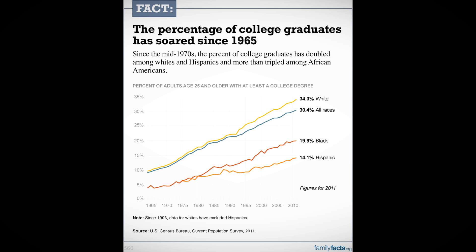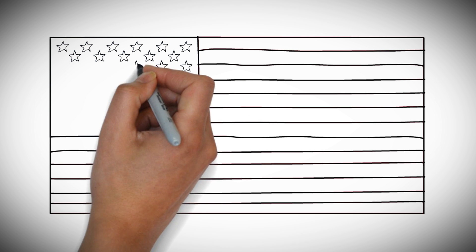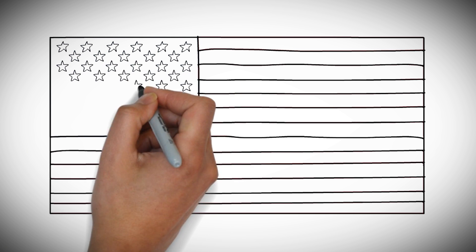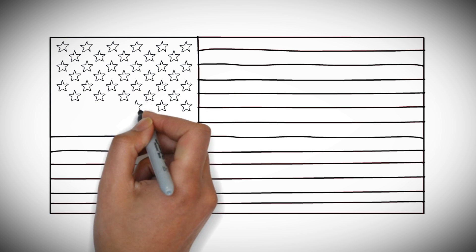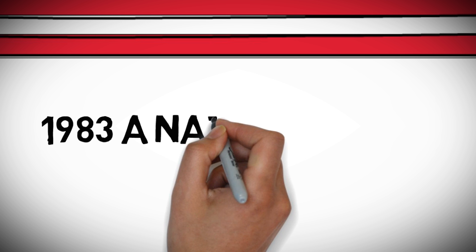Now that the United States had solved the problem of graduation from high school, they began to attack college graduation rates as well. This document demonstrates that the number of college graduates has soared since 1965, which may present some evidence that vocational training and the duality of education was somehow working. Unfortunately, that's not the case. Both college prep and vocational education developed side by side in this country, however, not necessarily equally.